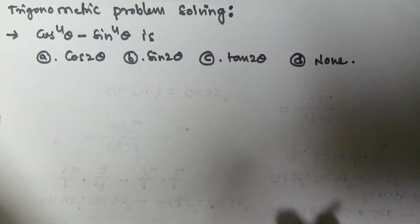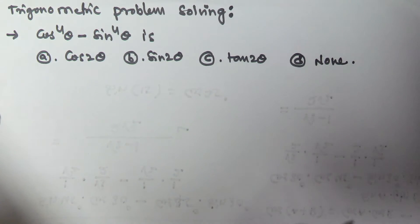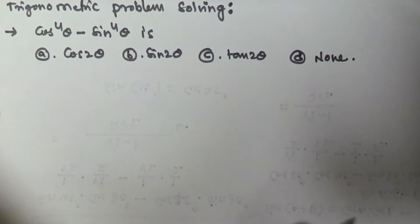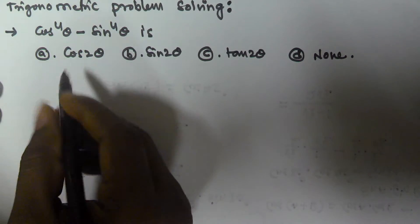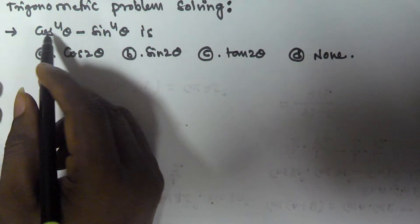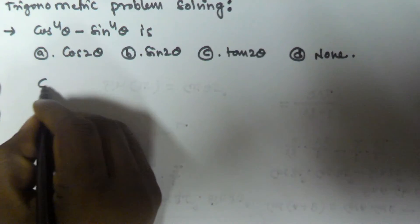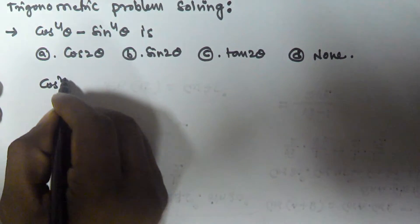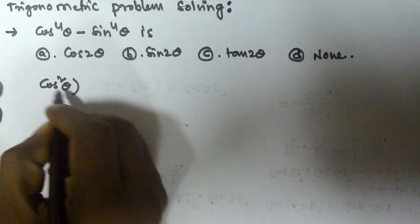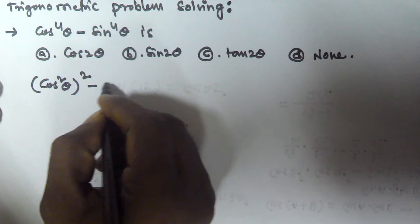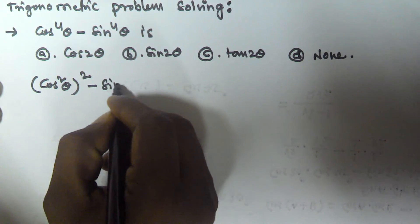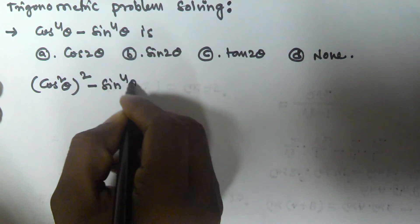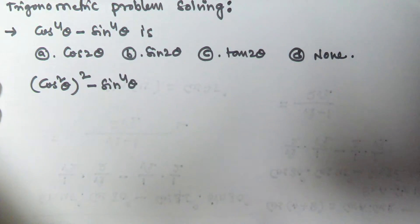We have to find the value of cos to the power of 4 theta minus sine to the power of 4 theta. So cos to the power of 4 theta can be written as cos squared theta, whole squared, minus sine to the power of 4 theta.